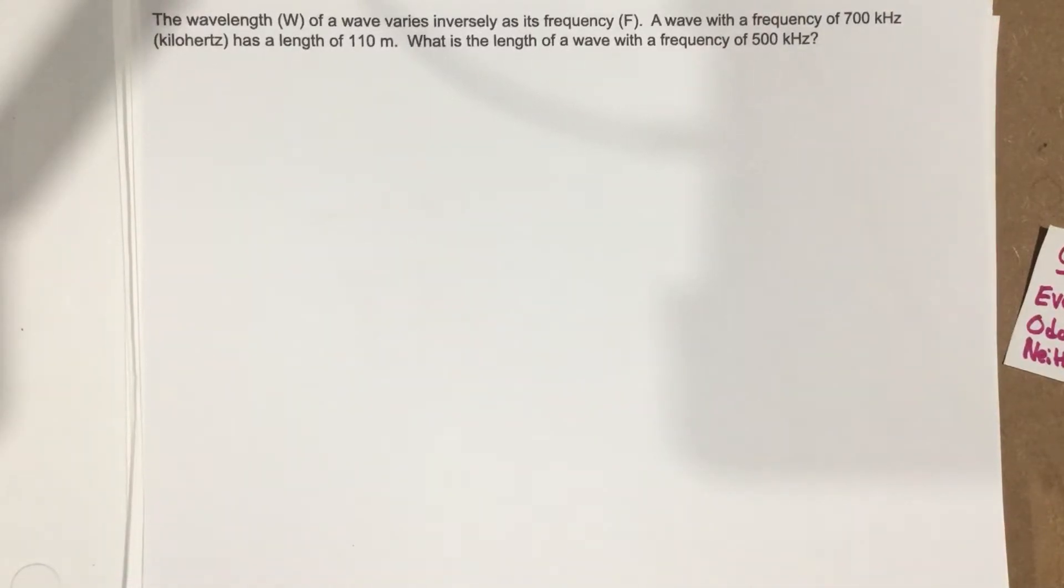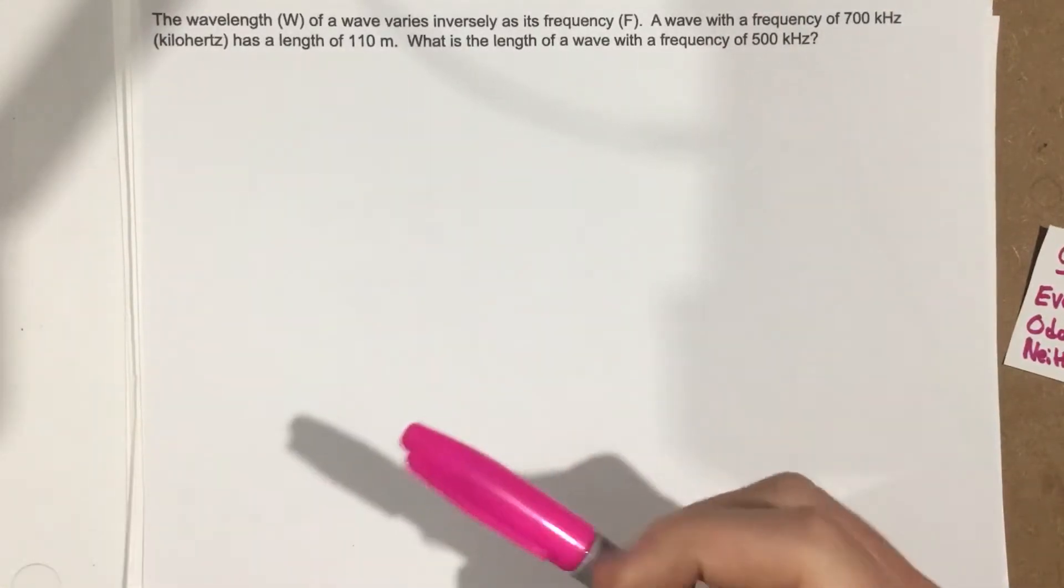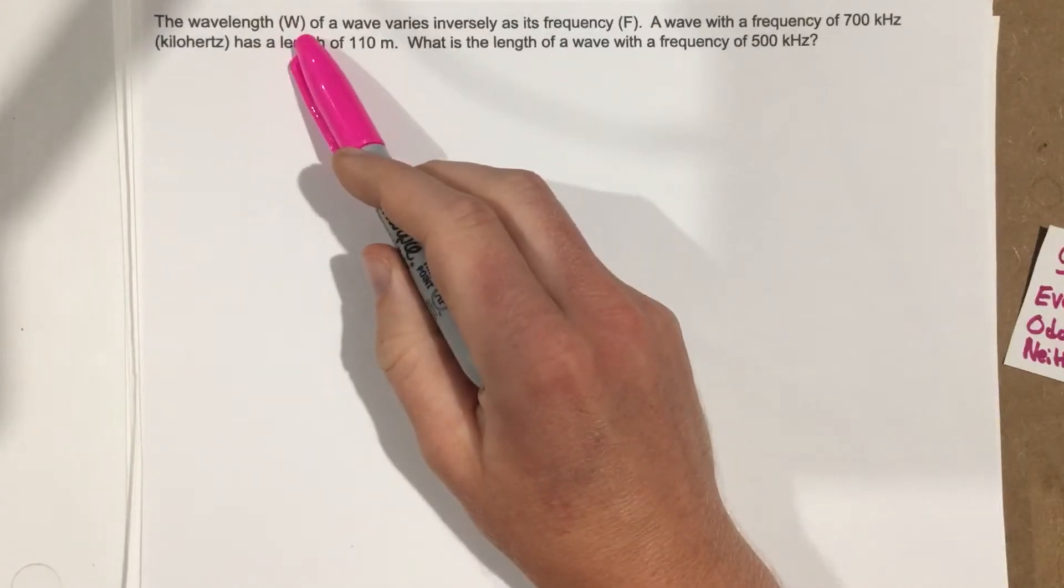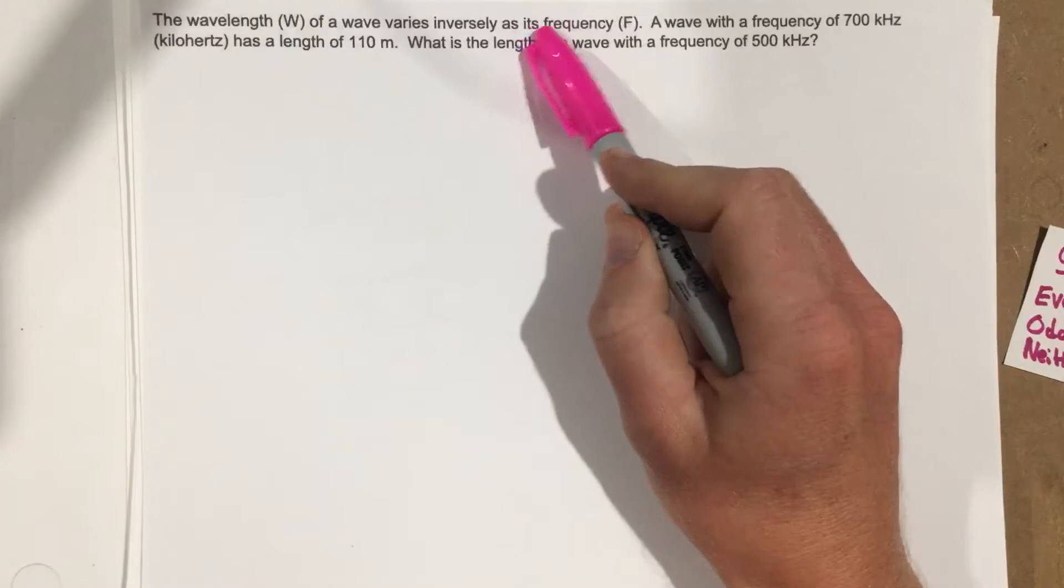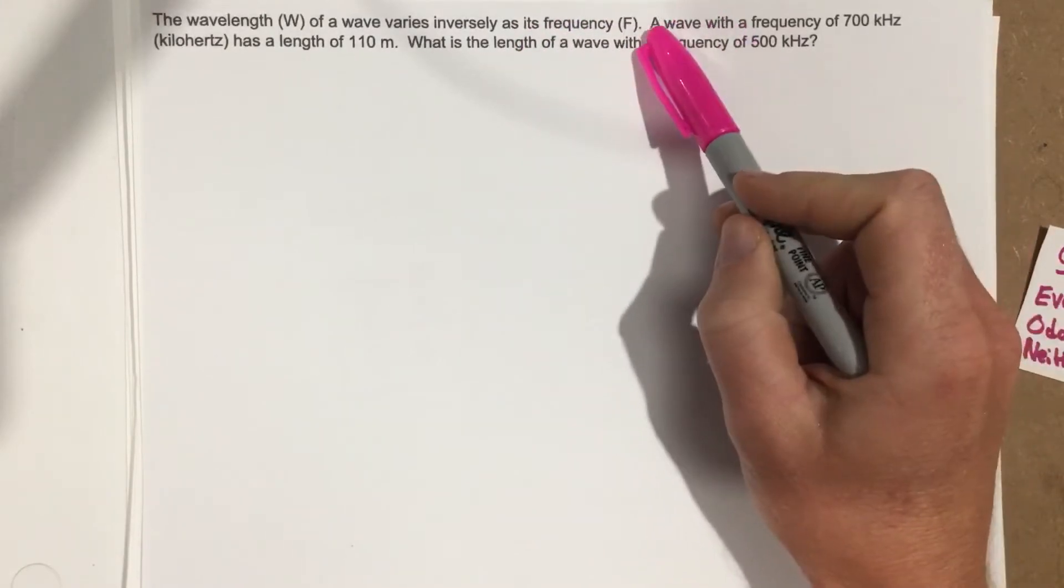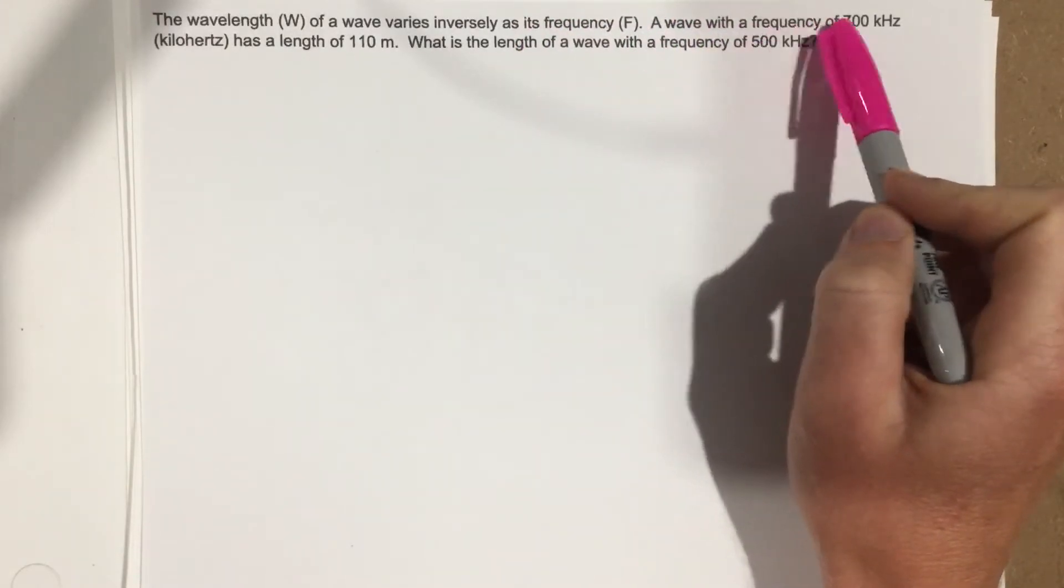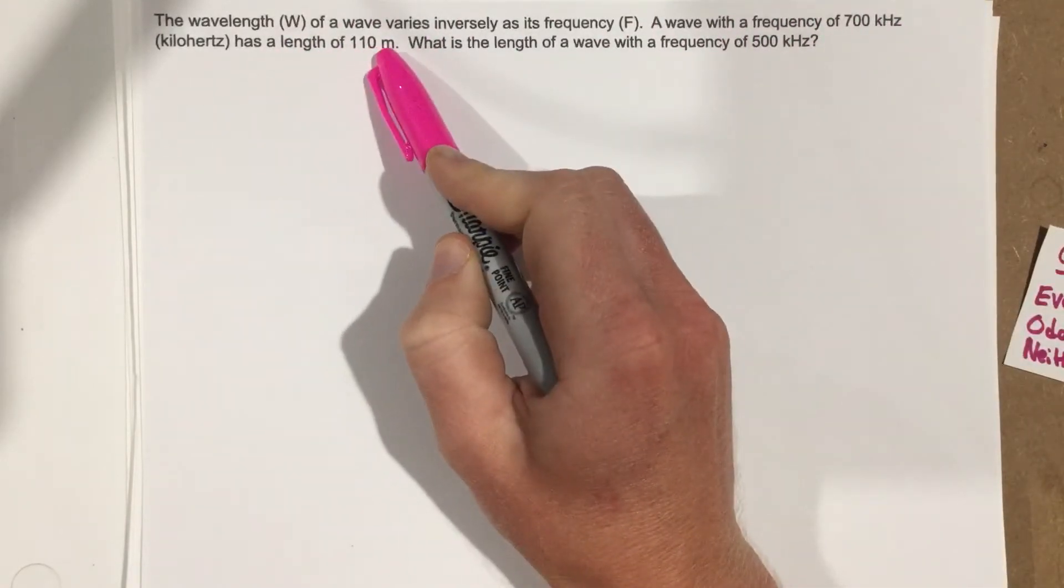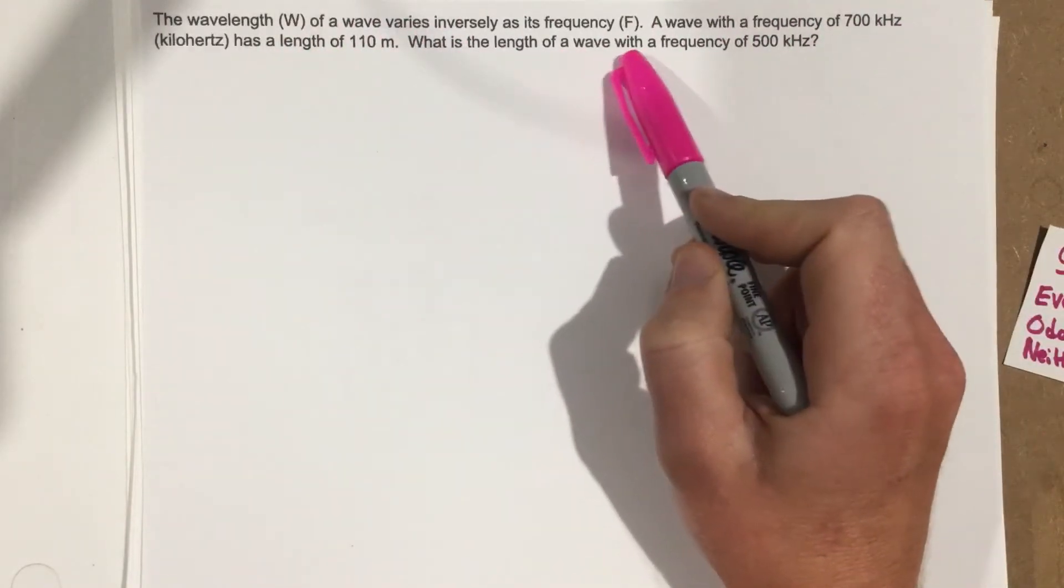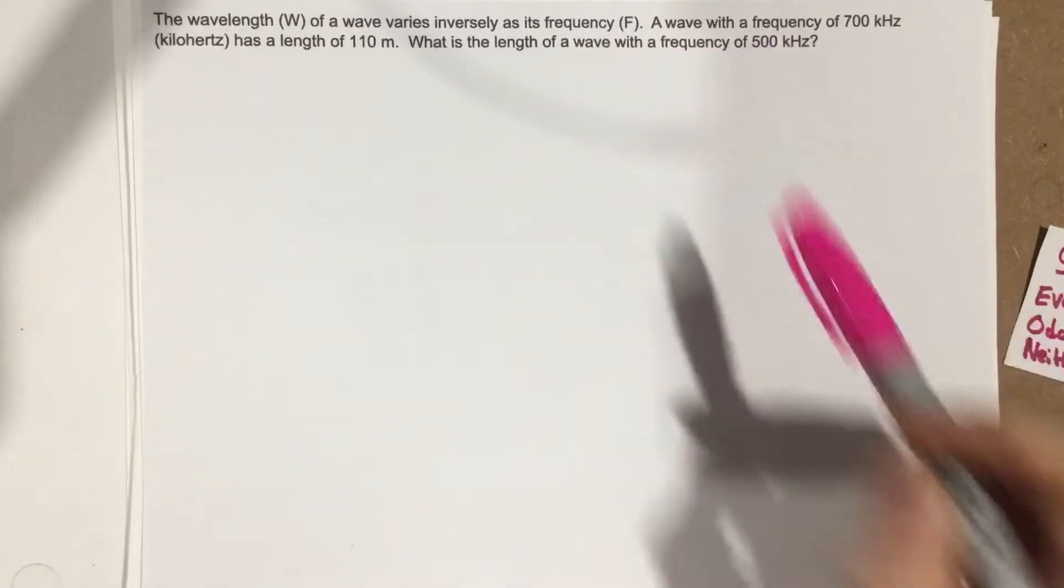This is problem number 9 from section 1.1. In this problem it says the wavelength W of a wave varies inversely as its frequency. A wave with a frequency of 700 kHz has a length of 110 m. What is the length of a wave with a frequency of 500 kHz?